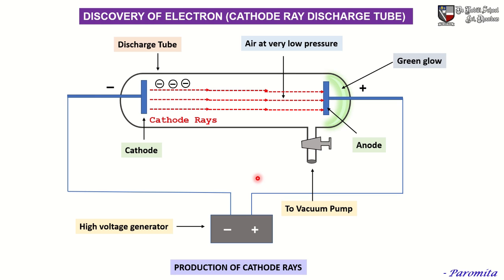This is the setup of the discharge tube. When a gas is taken in the discharge tube and high voltage is applied across the terminals, keeping the pressure inside the tube extremely low in the range of 0.01 to 0.001 mm of mercury, an electric current flows through the tube. This flow of electricity is associated with a glow or rays of light which originate at the cathode and travel from the cathode towards the anode. Since these rays originate at the cathode, they are also termed as cathode rays.